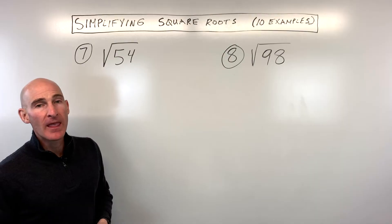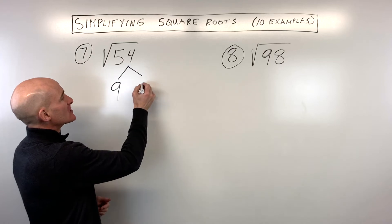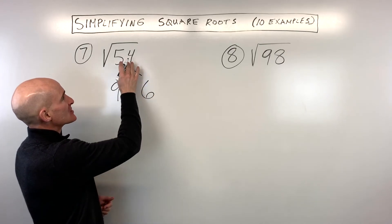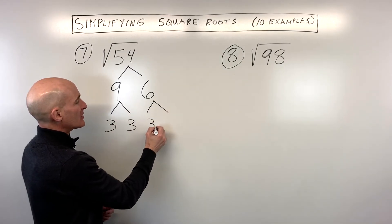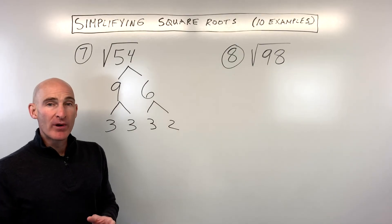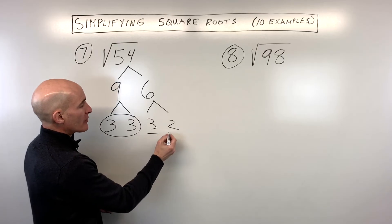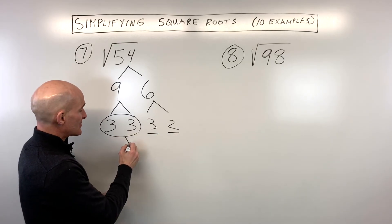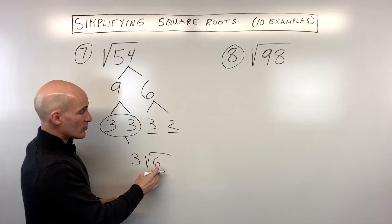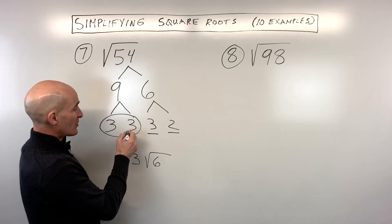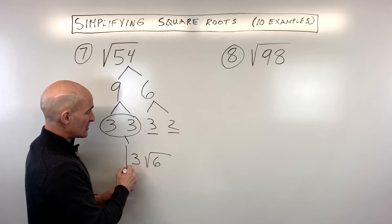The square root of 54 — see if you can pause the video and try it. I would break it down into prime factors: 9 times 6 is 54. 9 breaks down into 3 times 3, and 6 breaks down into 3 times 2. Looking for pairs of the same number: here's a pair of 3s, with a 3 and a 2 left over. So the answer is 3√6 — the 3 pairs come out as 3 in front, and the remaining 3 times 2 equals 6 stays underneath. Remember, the pair of 3s represents 9, and the square root of 9 is 3.